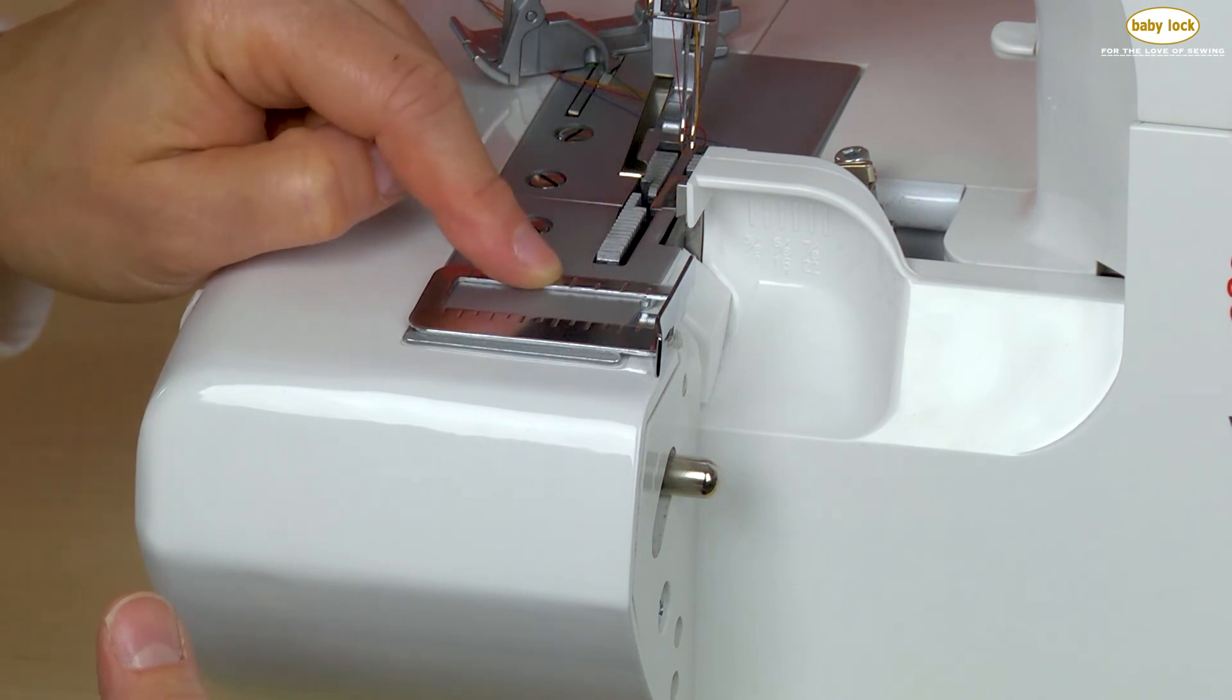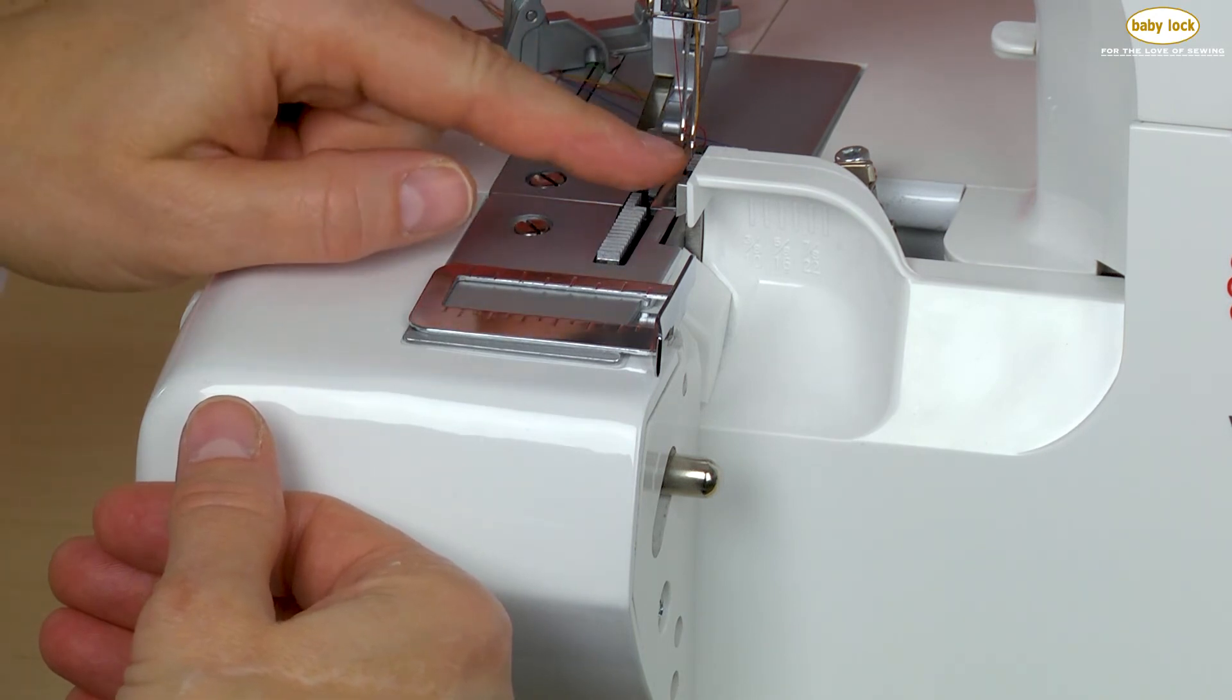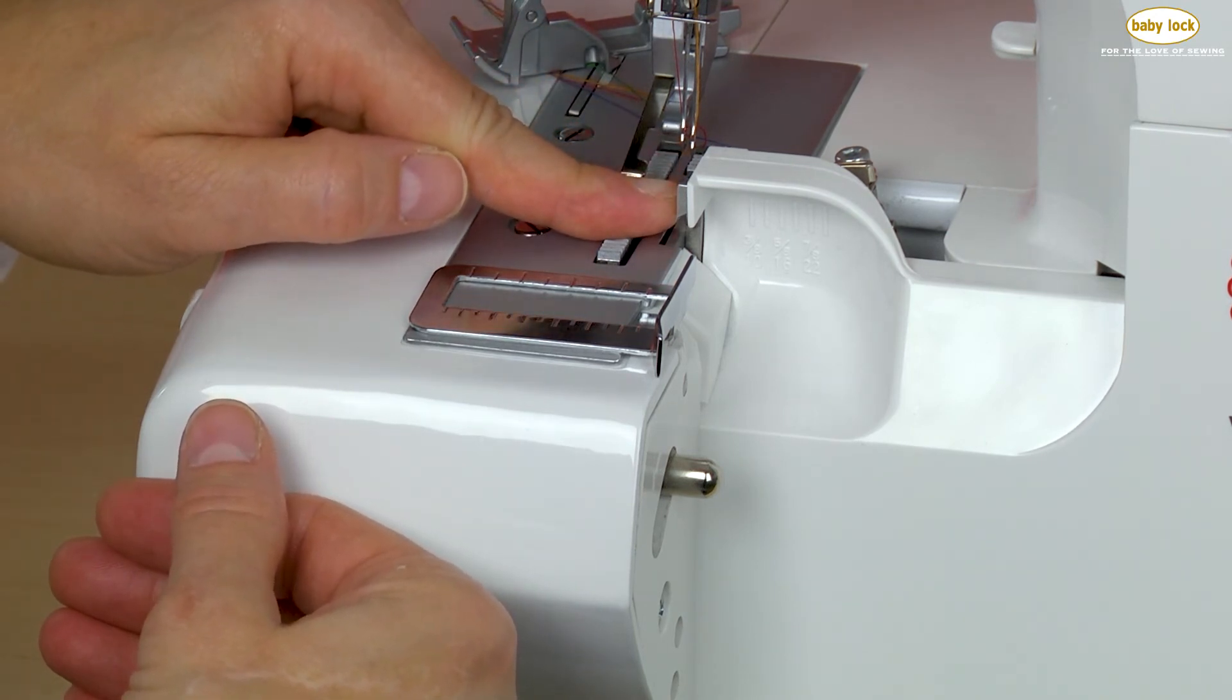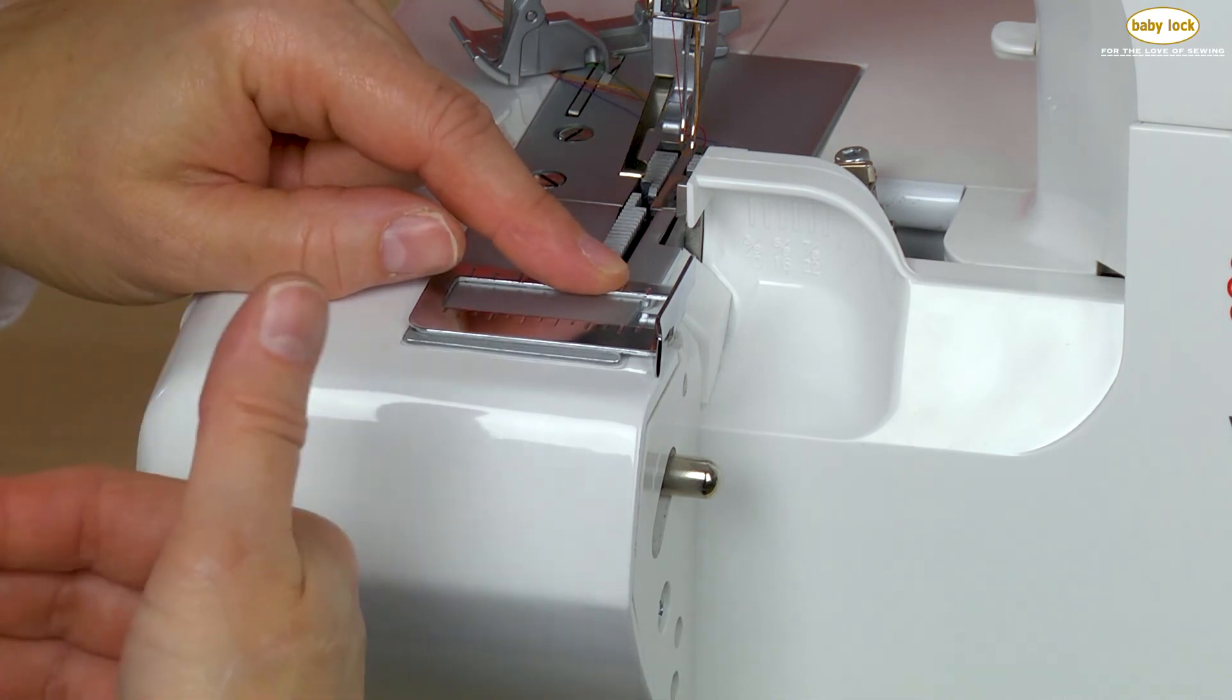When you're working with this cutting width gauge or guide, I strongly suggest that you take your presser foot off, align your cutting blade where you need it to be, and then adjust your guide so you trim the proper amount off of your fabric.